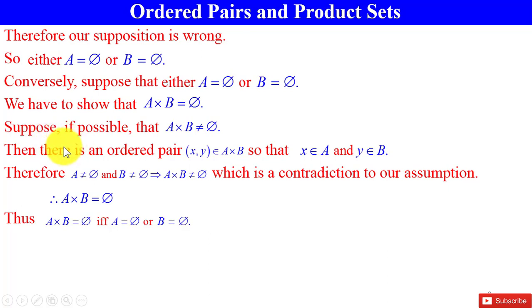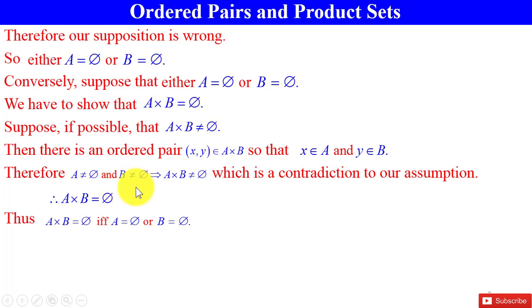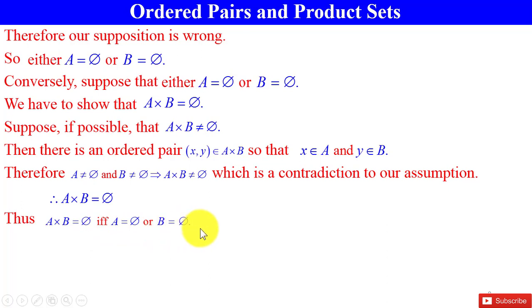Then there is an ordered pair (x, y) ∈ A×B, which implies A is non-empty and B is non-empty — a contradiction to our assumption. Therefore A×B = ∅. Thus, A×B = ∅ if and only if A = ∅ or B = ∅. That is, if the Cartesian product of two sets is empty, then at least one of them must be the empty set.